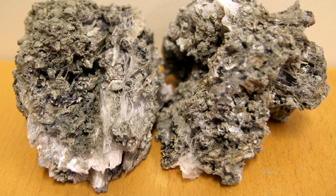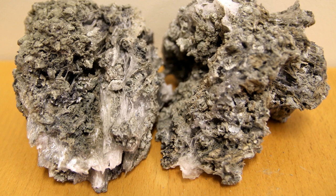Liquid silicon is very viscous and the material mix will not flow down naturally. As a result, the cavity roof is formed. This is a very simplified picture, and during industrial excavations many different zones and geometries have been found. However, the common picture is the presence of the cavity, alpha silicon carbide built up in the furnace, and partly transformed raw materials in the top part of the furnace.